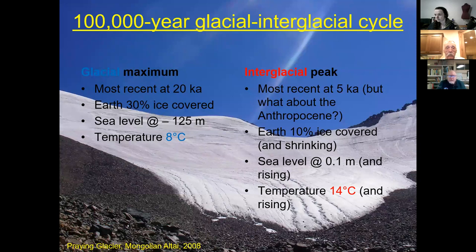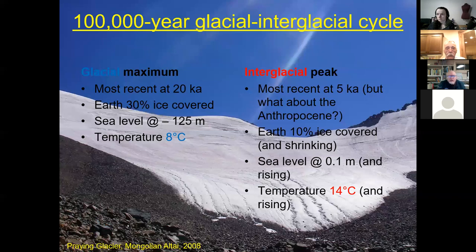Within each ice age, we have currently 100,000-year glacial-interglacial cycles. The peak of the last glaciation was only 20,000 years ago. The Earth's land was 30 percent covered by ice. The ultimate source of that ice was the oceans, so sea level was down 125 meters and the mean temperature of the Earth was approximately 8 degrees Celsius. In between these glaciations, we had relatively short interglaciations; the peak of the most recent one was 5,000 years ago.